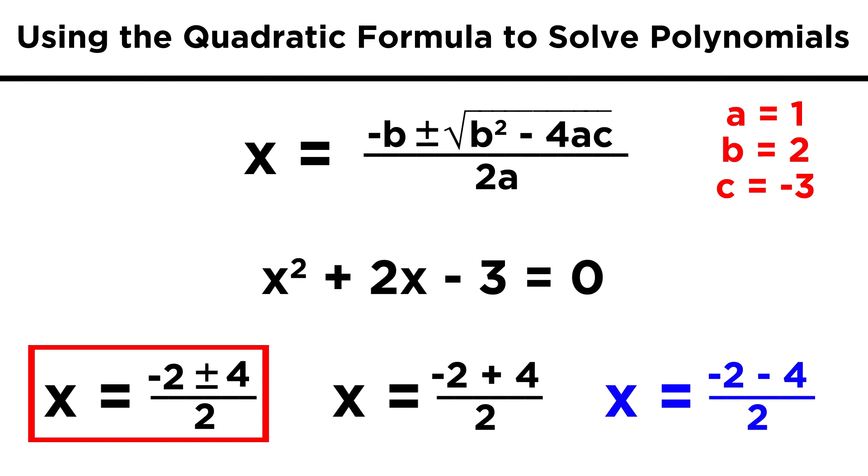Negative two plus four over two, or negative two minus four over two. These give us two over two, and negative six over two, which is one and negative three, so the formula works.